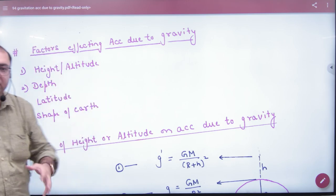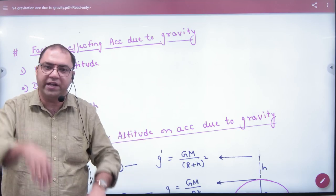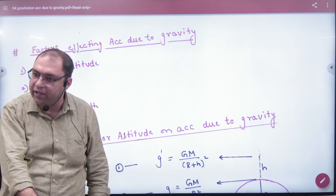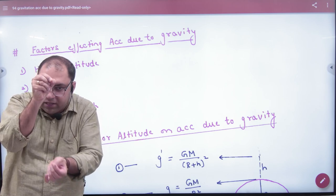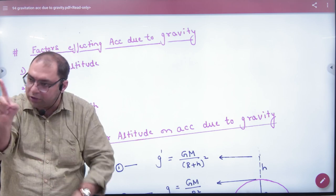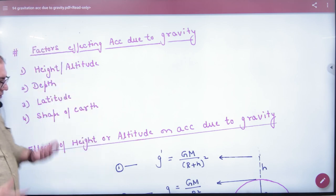The second factor is depth. If you dig a tunnel, it will be limited to the center of Earth. If you go down a few kilometers, then the object's distance will be reduced from the center. So small g will change. How will it be changed?